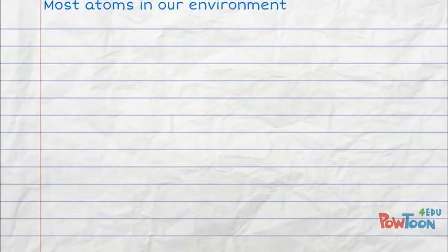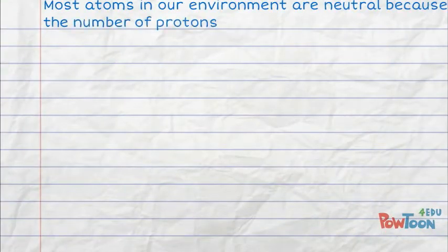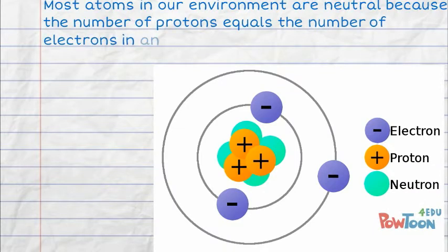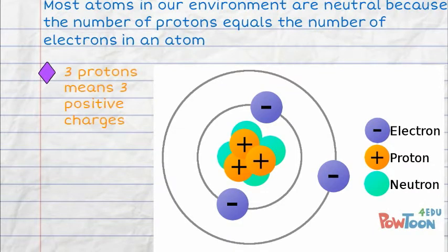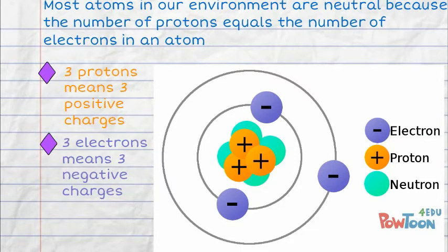Most atoms in our environment are neutral because the number of protons equals the number of electrons in an atom. Three protons means three positive charges. Three electrons means three negative charges. Positive three plus negative three equals zero or neutral.